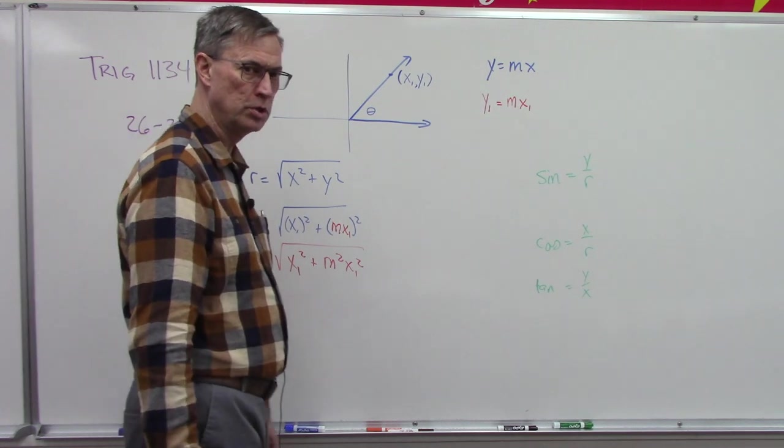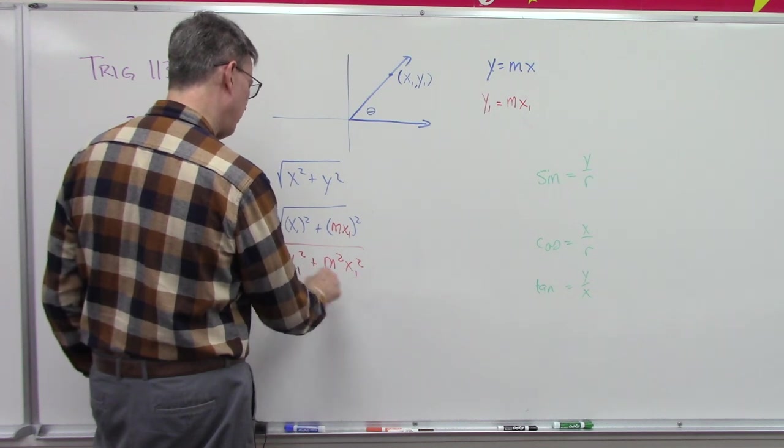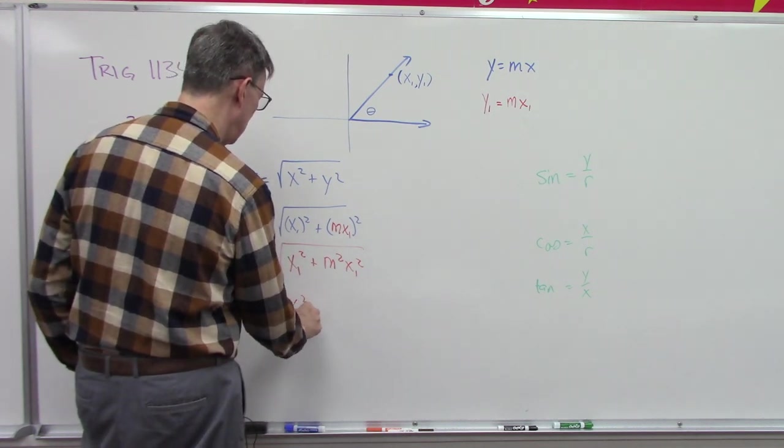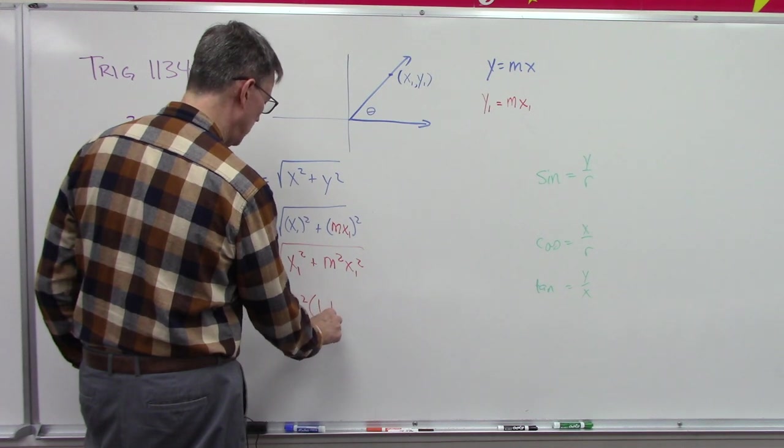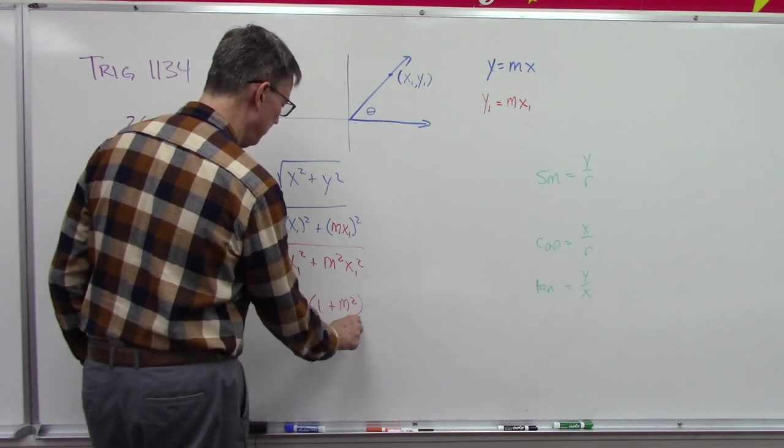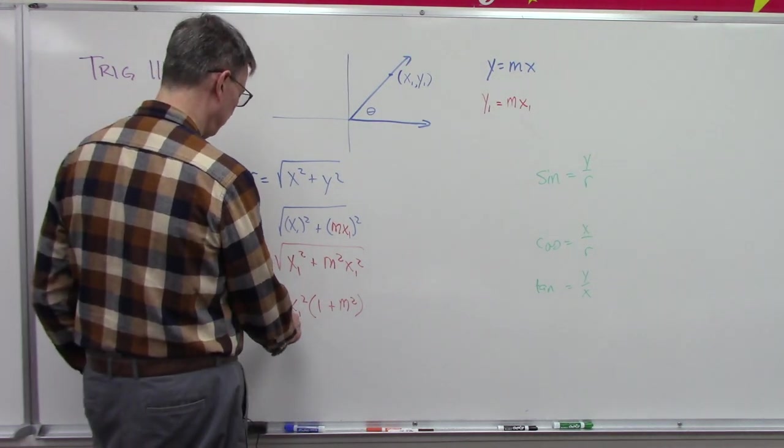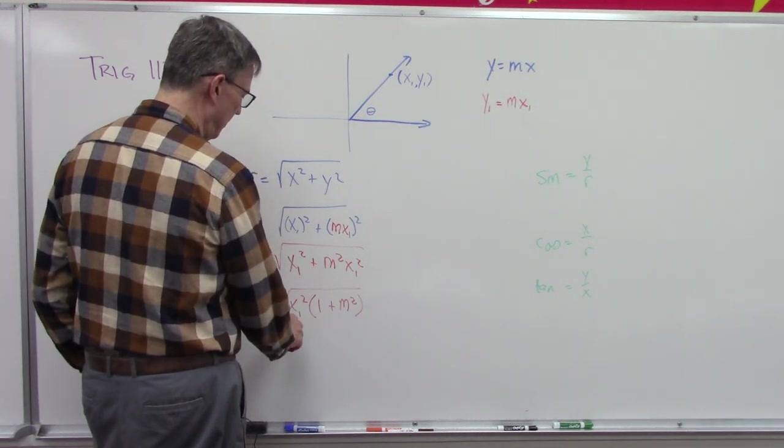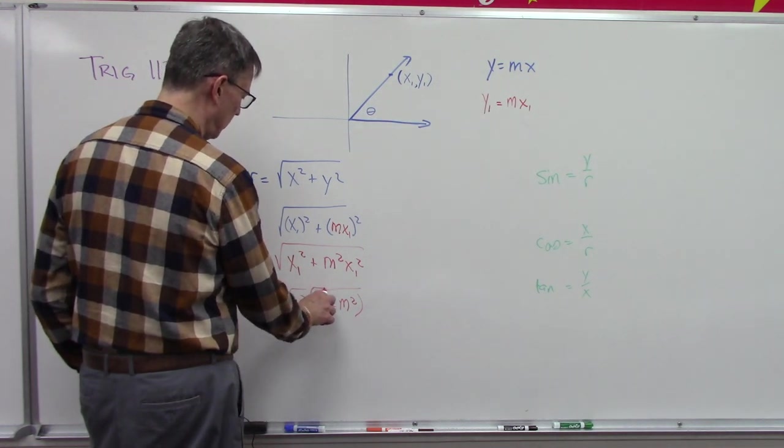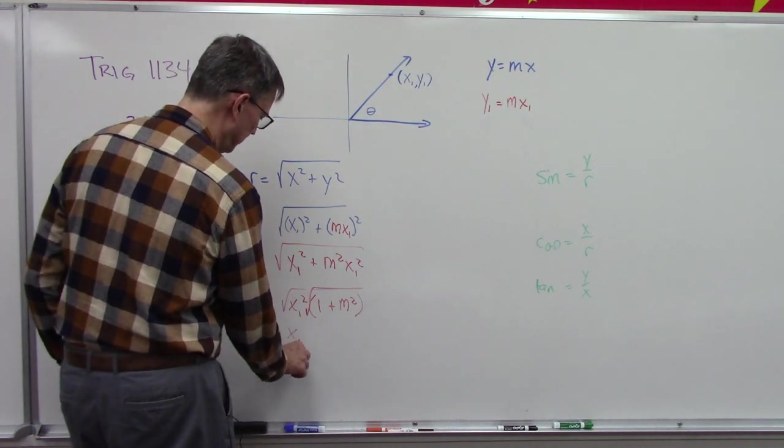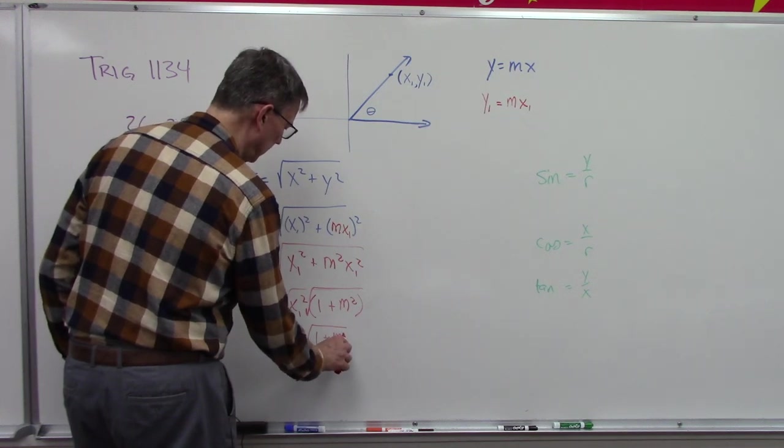Now can I factor this x₁ squared out of both of these? Yes indeed. X₁ squared factored out of that and I have one x₁ squared plus m squared. Now I'm going to break it up and have the square root of this times the square root of that. Well, the square root of that is just the x₁ pops out, so I have x₁ square root of 1 plus m squared.